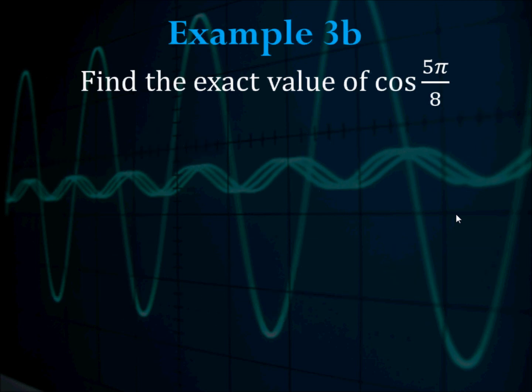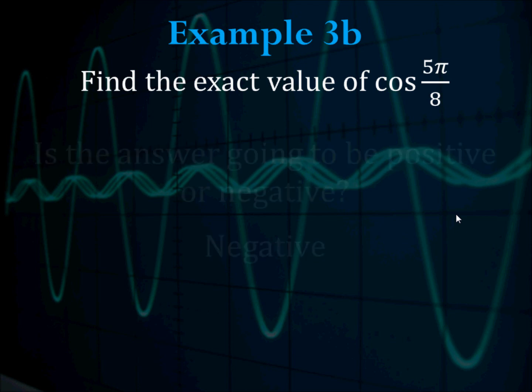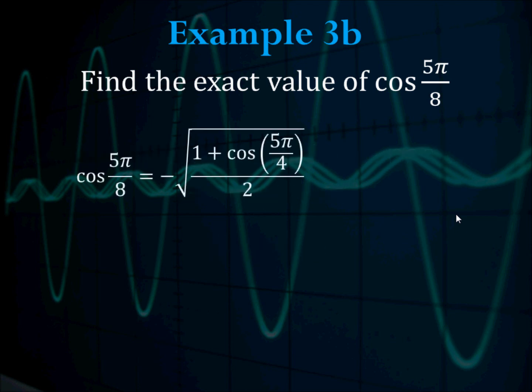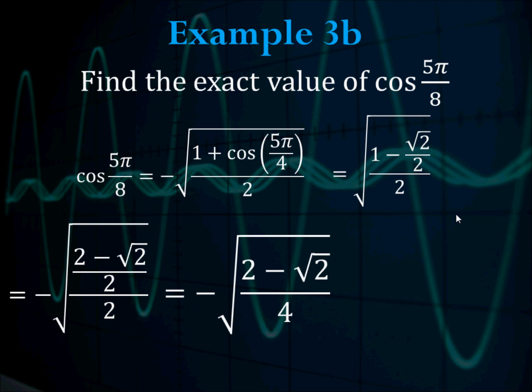Example 3b: find the exact value of cosine of 5π/8. We use the same approach with theta equal to 5π/4. Since 5π/8 is in the second quadrant, and cosine is negative in quadrant 2, we use the negative square root. Cosine of 5π/8 equals the negative square root of (1 plus cosine 5π/4) over 2. Plug in and simplify step by step to reach the answer.